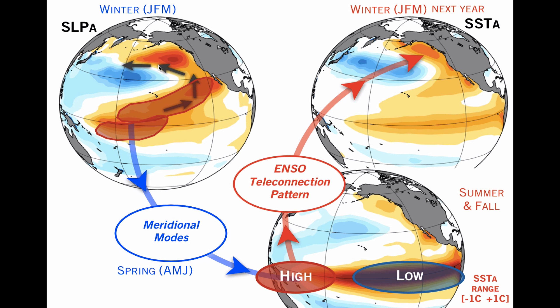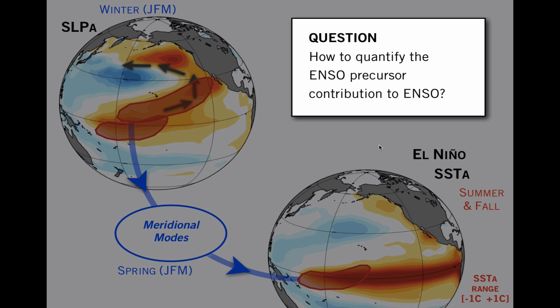So this back-and-forth between the extratropics, the tropics, and back to the extratropics associated with this ENSO precursor — in this case the meridional mode — is an important way of reddening the ENSO spectra and adding more memory to ENSO. So let's ask the question: how to quantify the ENSO precursor contribution to ENSO?